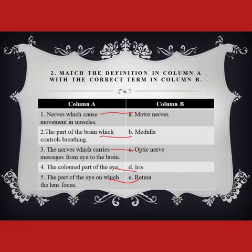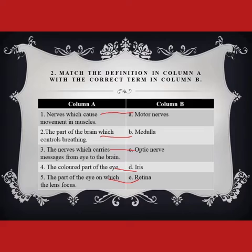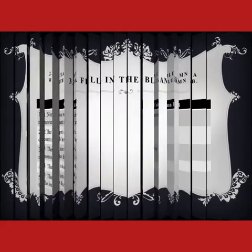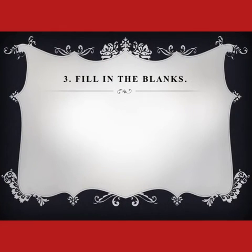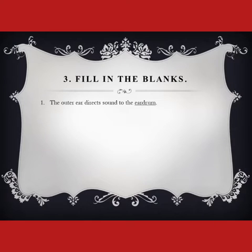Question number three is fill in the blanks. Statement one: the outer ear directs the sound. The outer ear directs sound into the middle ear, where a thin membrane is present — we call it the eardrum. So 'eardrum' is your answer.